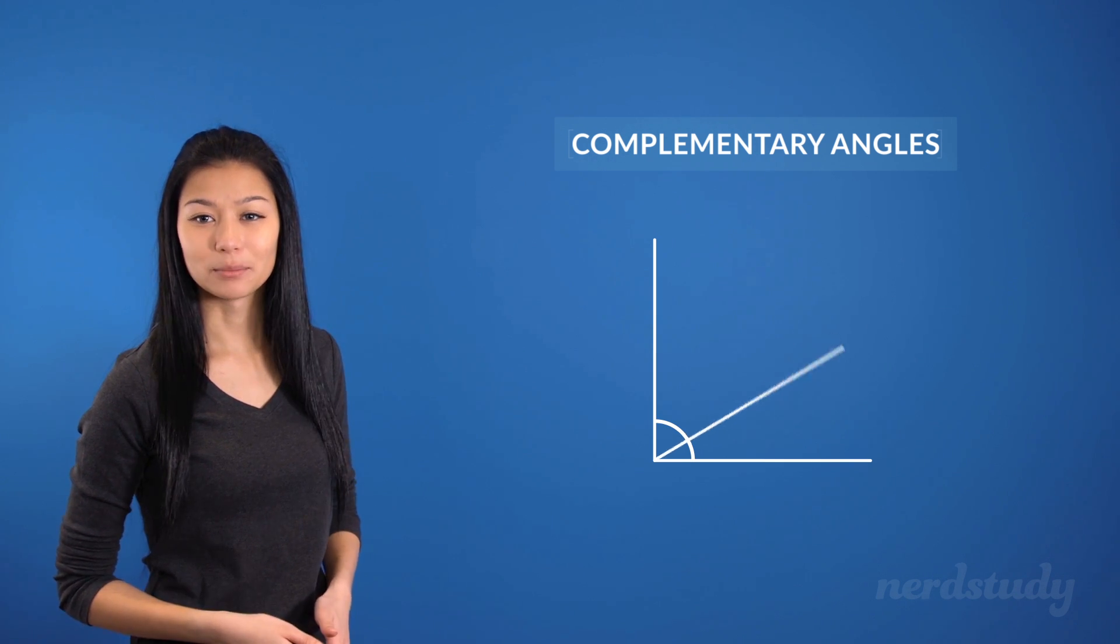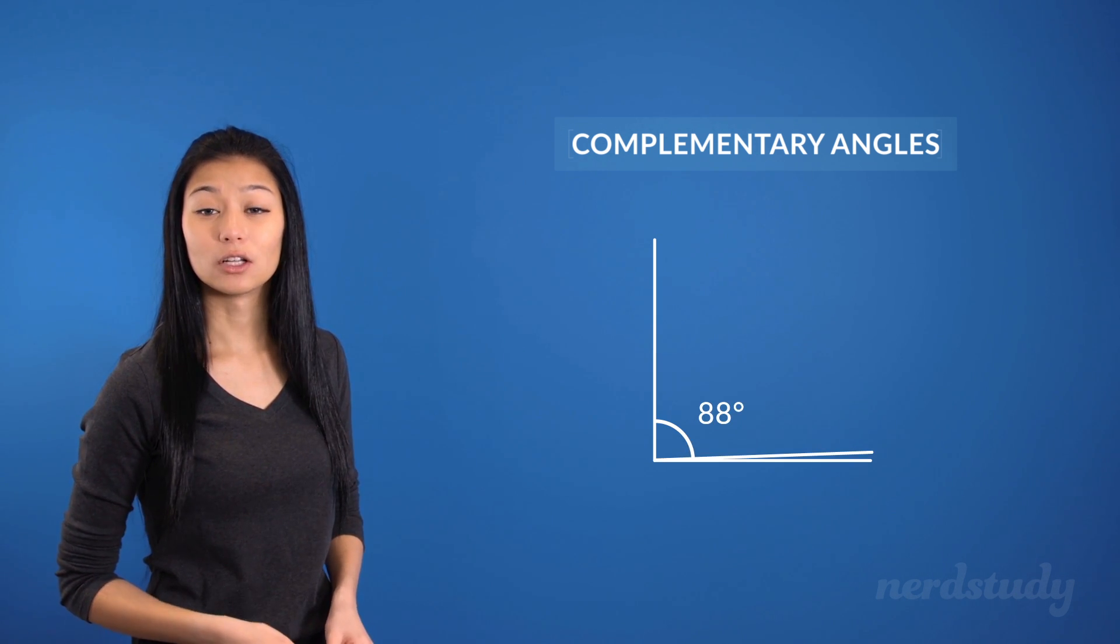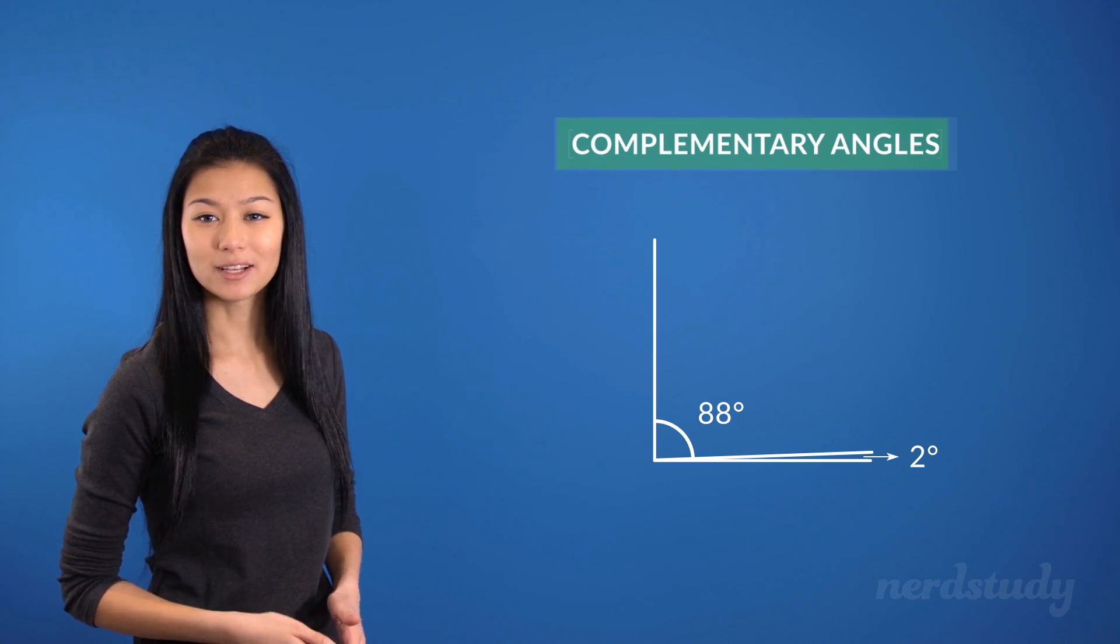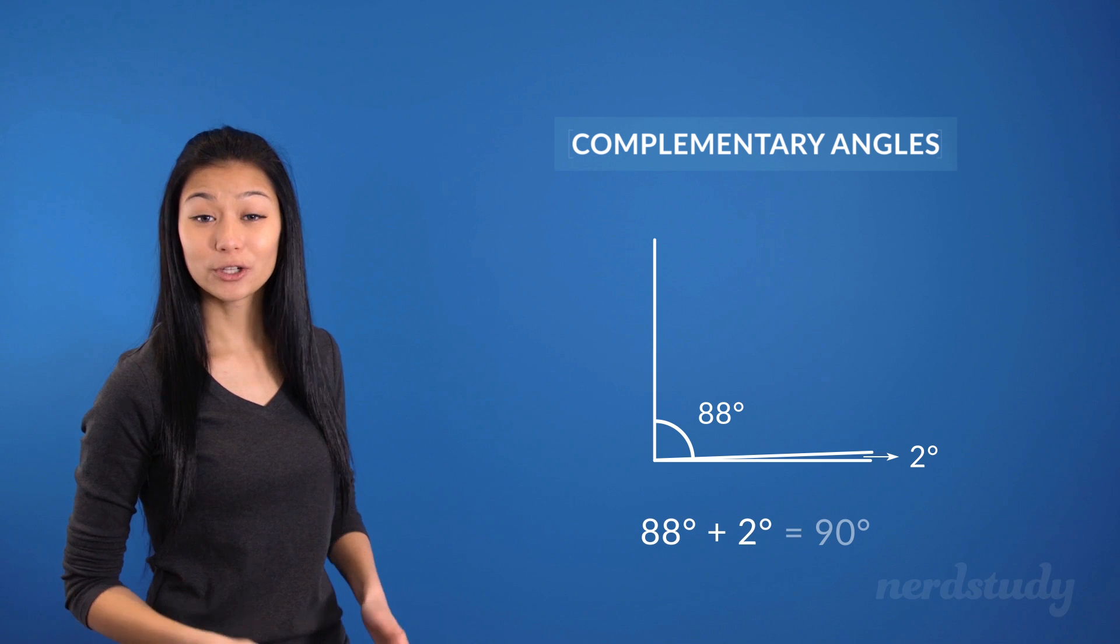As well, in this example, an 88 degree angle along with a 2 degree angle would also be complementary angles, since, again, they add up to be 90 degrees.